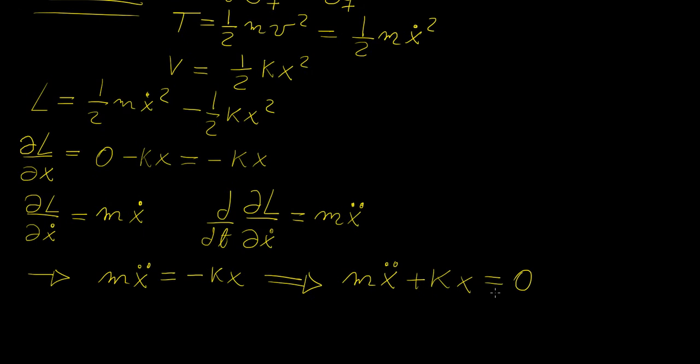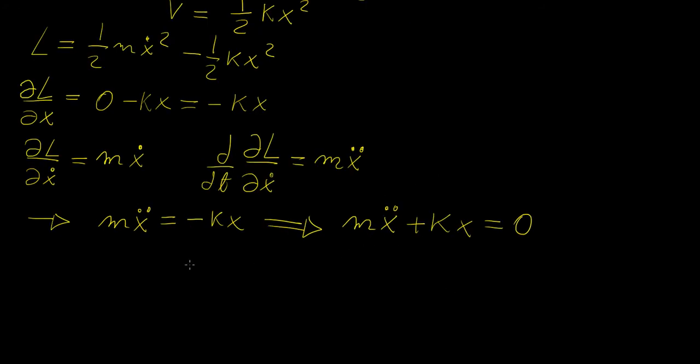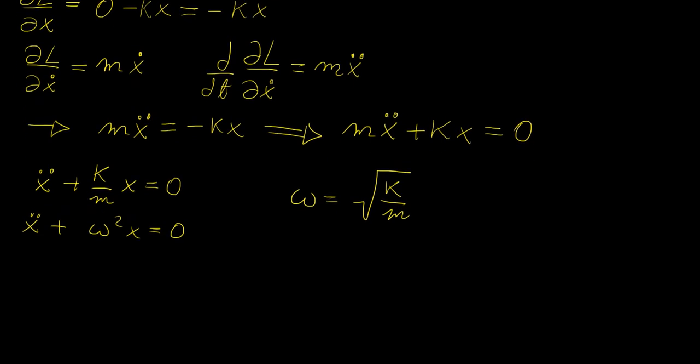Now what does the solution to this look like? We could write this in terms of x double dot plus k over m x equals to zero, and then you know that we can make the substitution x double dot plus omega squared x equals to zero, where omega is just the square root of k over m, which is often the natural frequency of oscillation of the system. And now we have a characteristic equation to this second order differential equation, so r squared plus omega squared equals to zero, which implies that r is going to be plus or minus i omega,